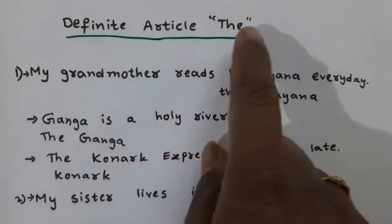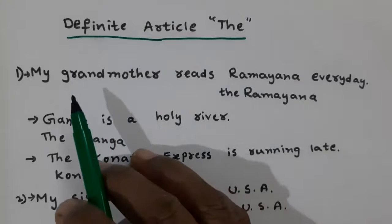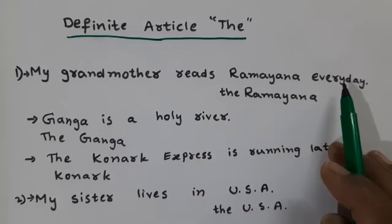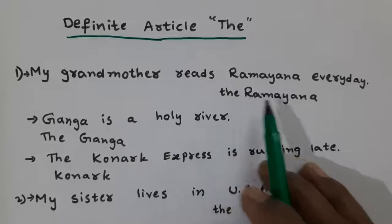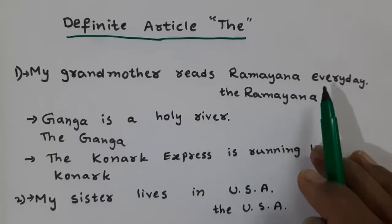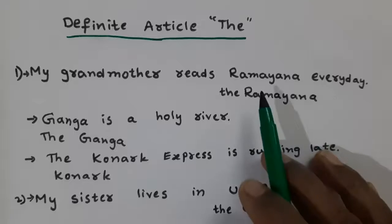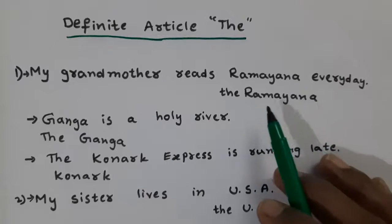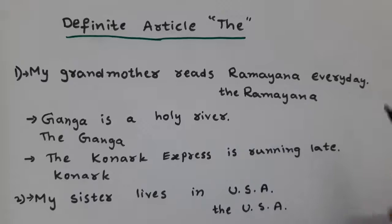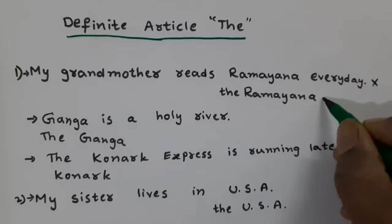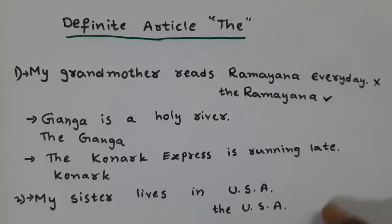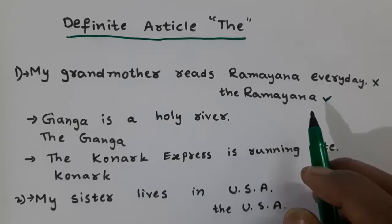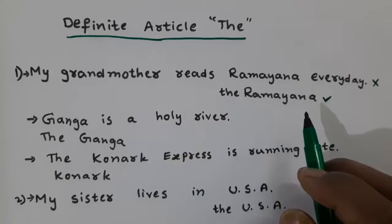Here you observe the definite article 'the'. First sentence: 'My grandmother reads Ramayana every day.' Next: 'My grandmother reads the Ramayana every day.' Which is correct — Ramayana or the Ramayana? Here, 'the Ramayana' is correct, because before holy books like the Ramayana, the Quran, the Bible, we use the definite article 'the'.